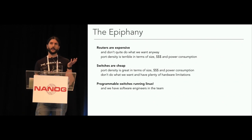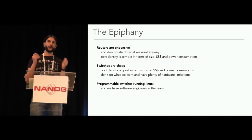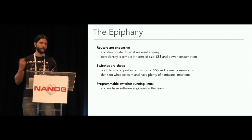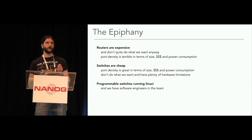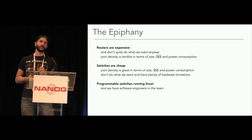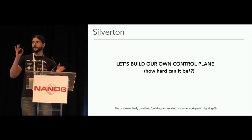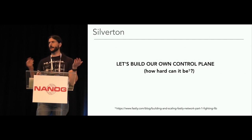At this point, the team came to the realization that routers are expensive, don't do what we want since we need to push responsibility to the application, and have poor port density — so both CapEx and OpEx would be bad. Switches are cheap but have limitations. However, in 2013 there was at least one vendor running Linux that would even give you access to program the switches yourself. So we decided to build our own control plane — how hard can it be? I'm going to hand-wave some details of the original control plane; you can visit the URL for more depth.